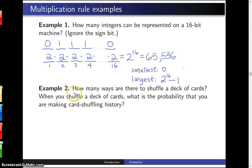So this second example asks the question, how many ways are there to shuffle a deck of cards? And when you shuffle a deck of cards, what's the probability you are making card shuffling history?